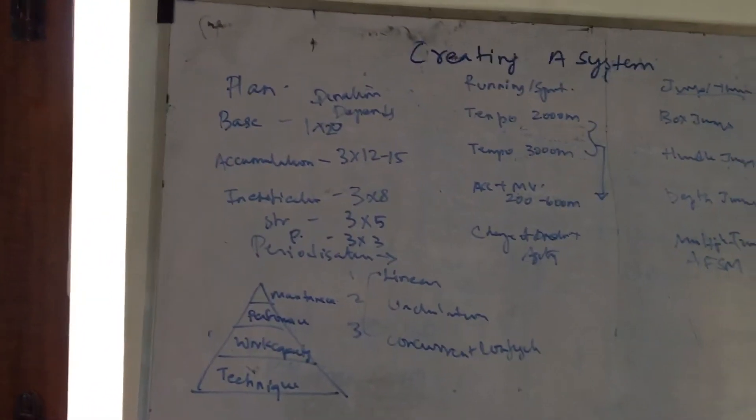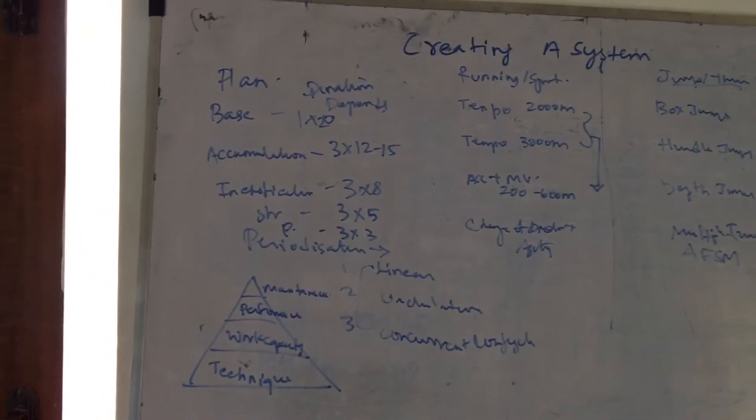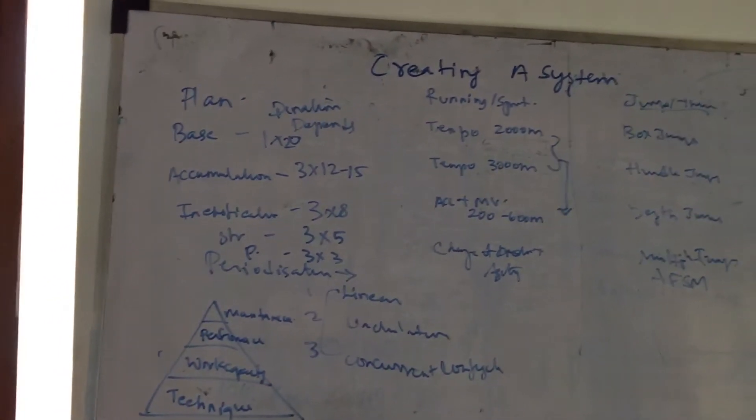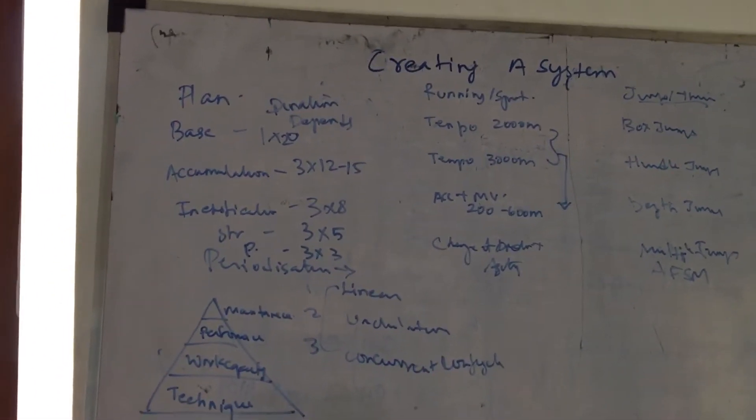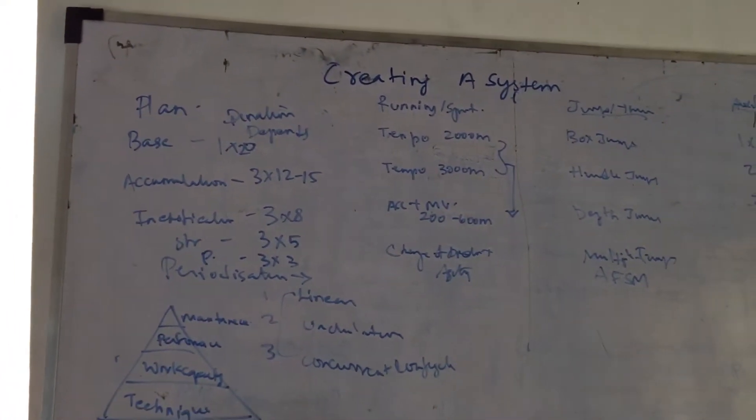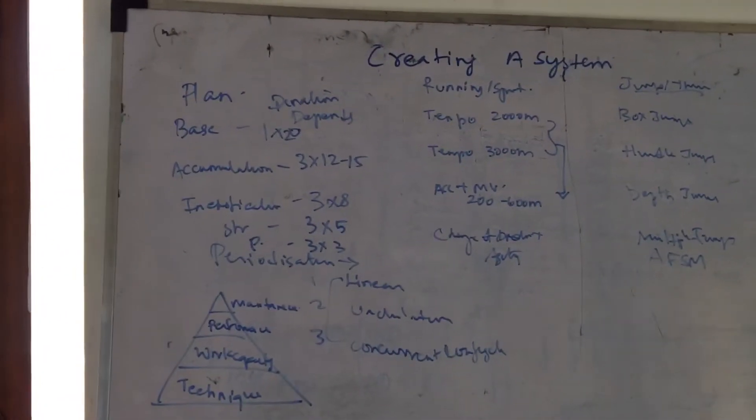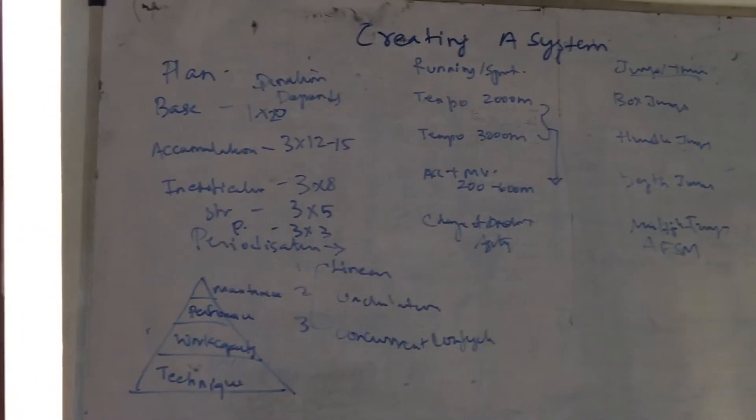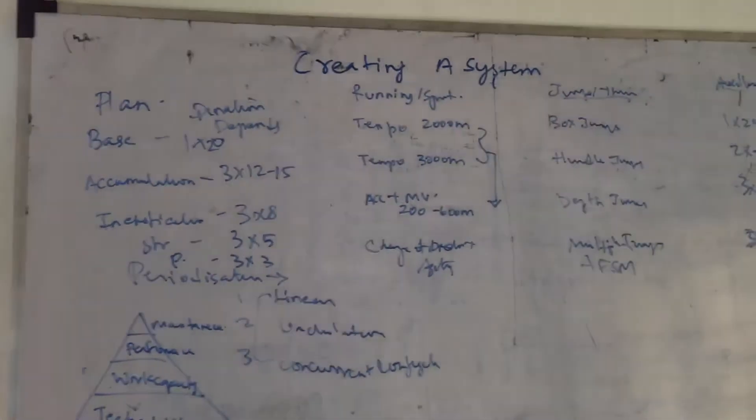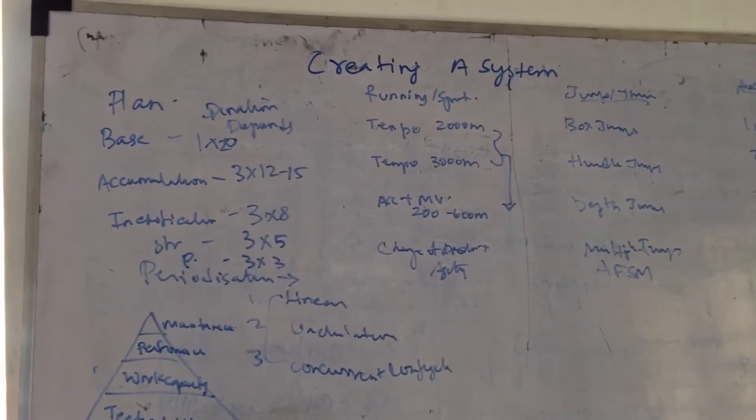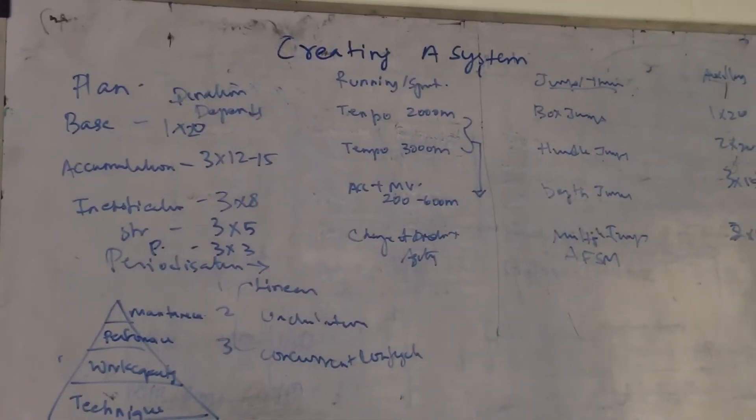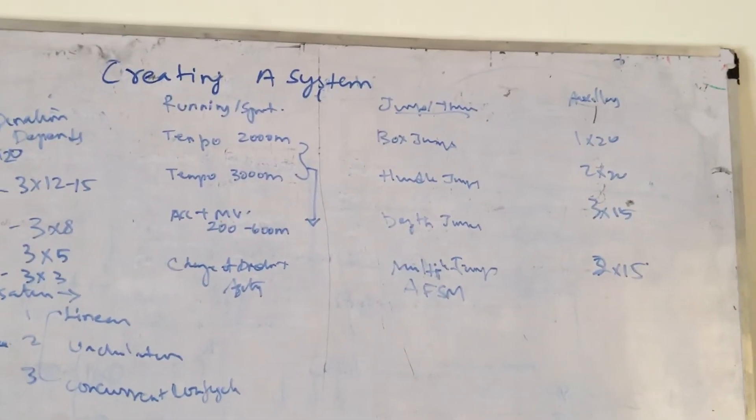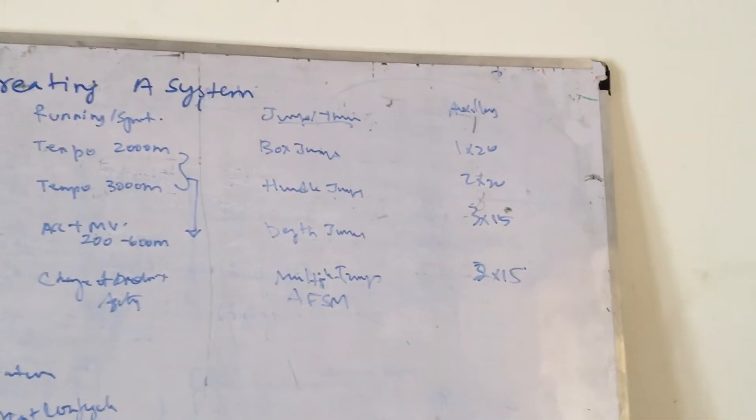Next phase is the accumulation phase, where I work on body composition, muscle endurance, and hypertrophy. 3x12 to 15 reps. This is mostly for beginners—the rep range will be very basic and minimal. For tempo, I'll build up to 3000 meters. I'll even add intensive tempo or something that works the lactic system. For jumps, progress to hurdle jumps. Auxiliary work is 2x20.